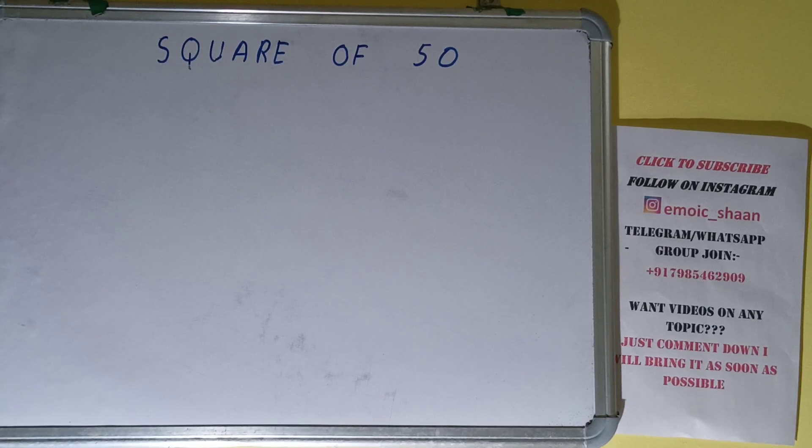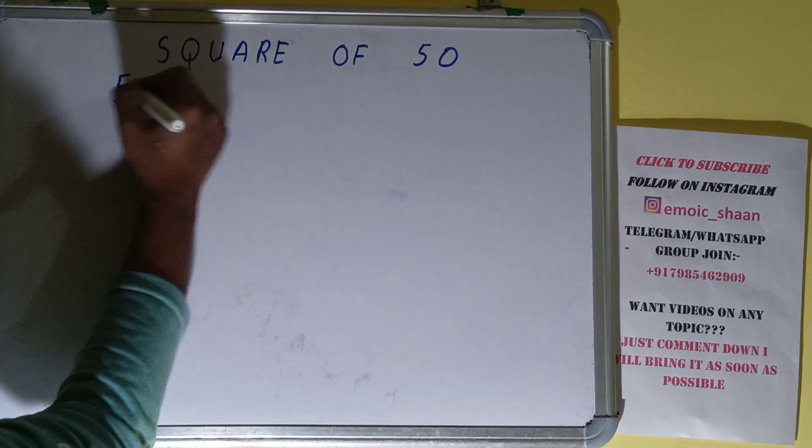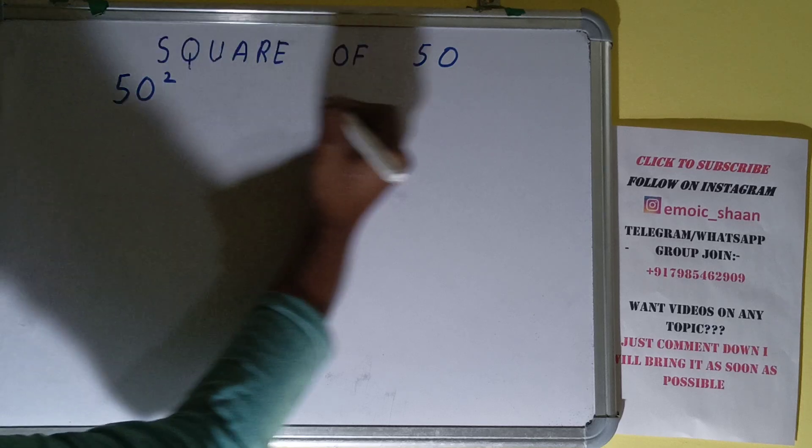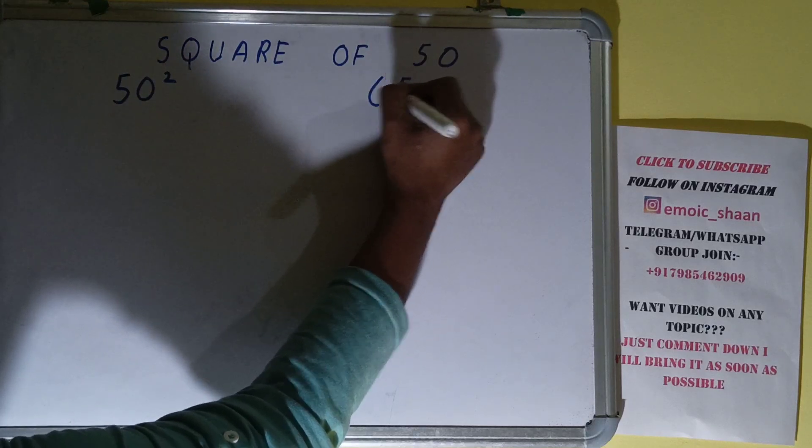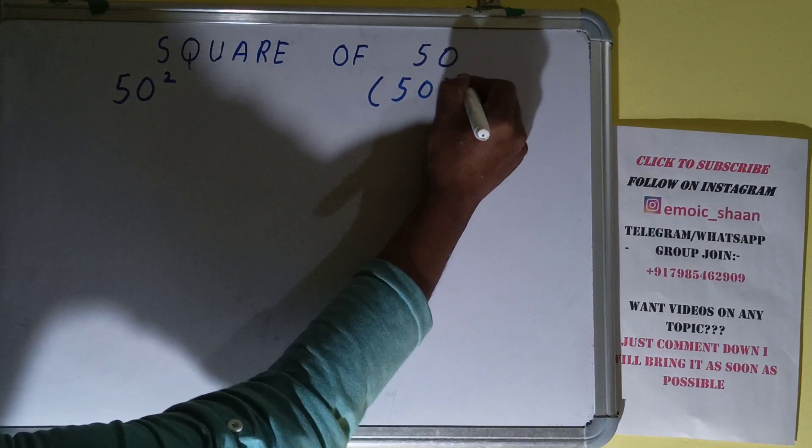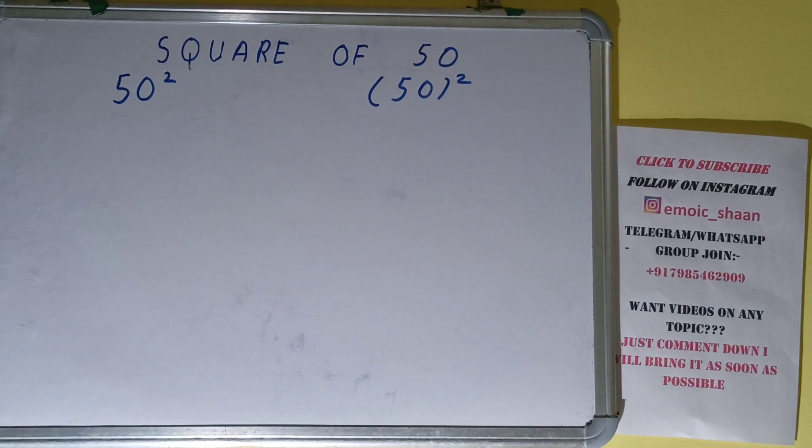Hello friends, in this video I'll be helping you with the square of the number 50. So let's start. Square of 50 can also be written as 50 raised to the power 2, or inside bracket 50 outside 2. These all have one and the same meaning - that is, we need to find the square of 50.